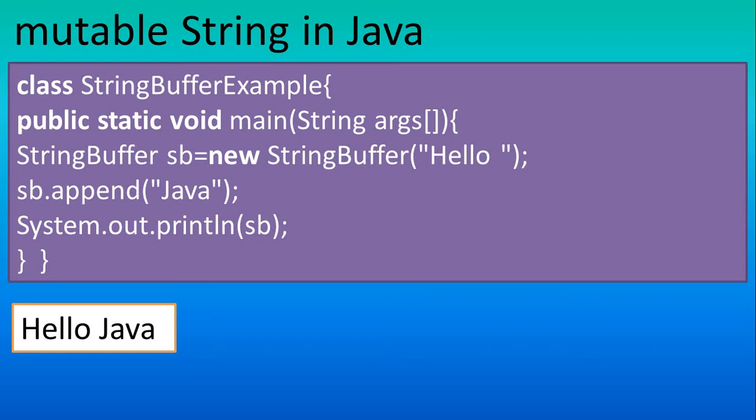Mutable string means the original value of the string can be changed using a specific class. That class is known as a mutable class. If you are able to change the initial string value, that is exactly the concept of mutable string.